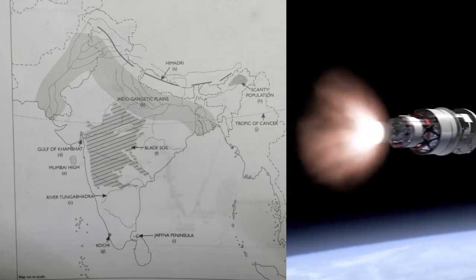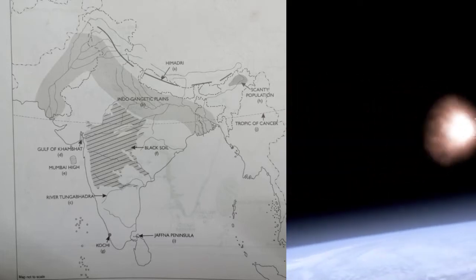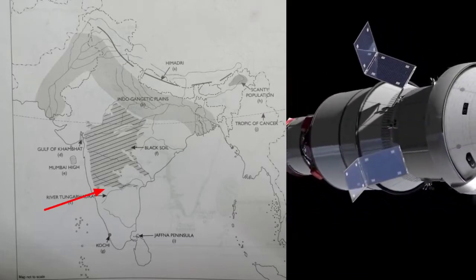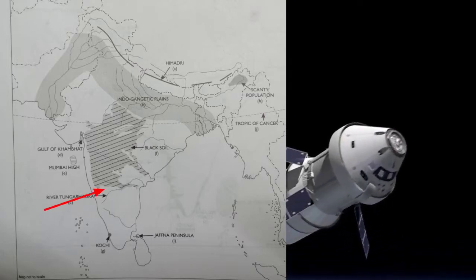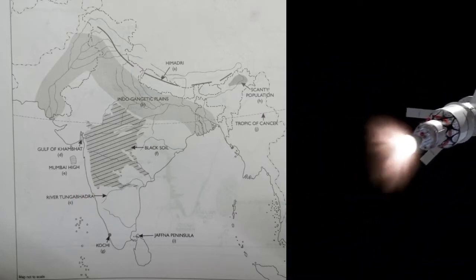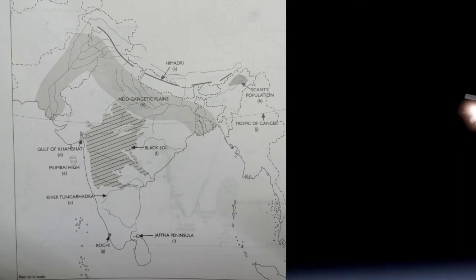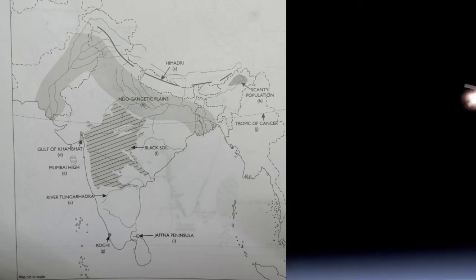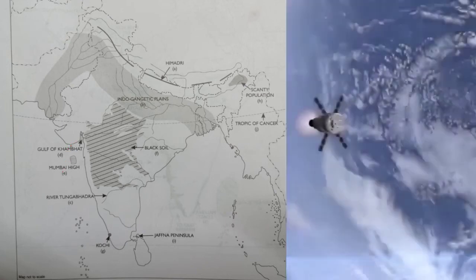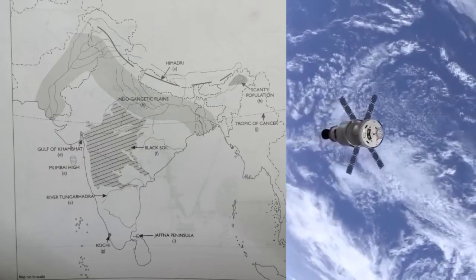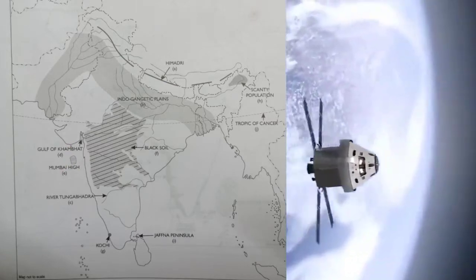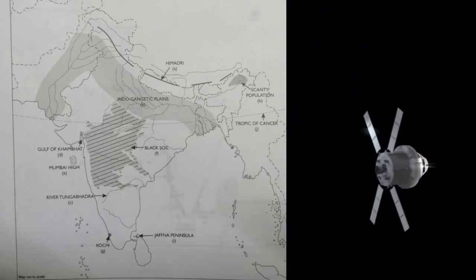Mark with an arrow and name the river Tungabhadra in this area. Must draw the arrow line and write river Tungabhadra. Next, mark and name the Gulf of Khambhat — in this area, Gulf of Khambhat.